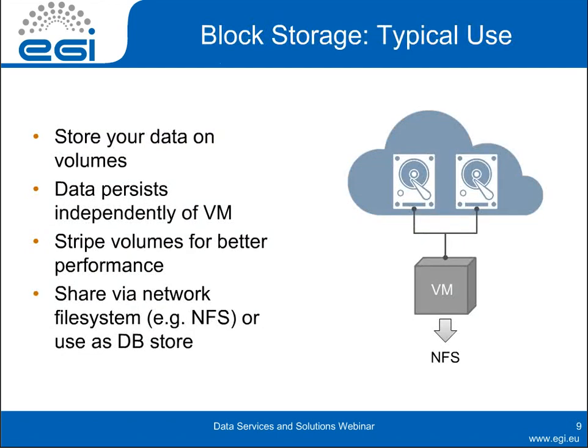The typical setup of a block storage would be to create one or several volumes and store your data there. Your data will persist independently of the VM, so if for any reason your VM dies, the data will still be there. You can do striping for better performance — setting up a RAID-0 of several volumes for better disk access performance. The usual way of sharing the information is using NFS, exporting your data to another virtual machine. Or you can use it as a database store, putting MySQL or Postgres on your virtual machine and storing the data in your volumes.